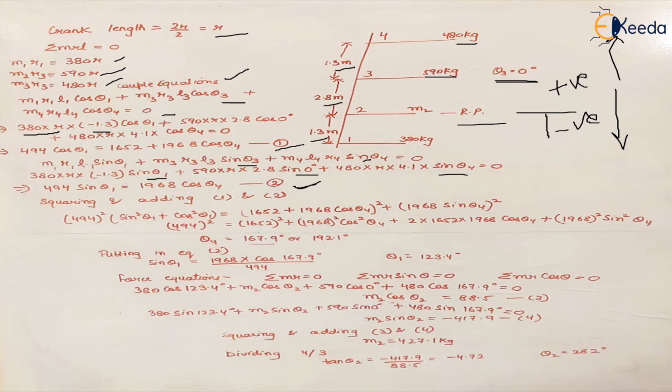There are two equations and two unknowns: theta1 and theta4. When we square and add these equations, we find two possible values. Both angular conditions are possible. Taking 167.9 degrees, if theta4 is 167.9 and we substitute it in equation 1 or 2, we get theta1 equals 123.4 degrees.